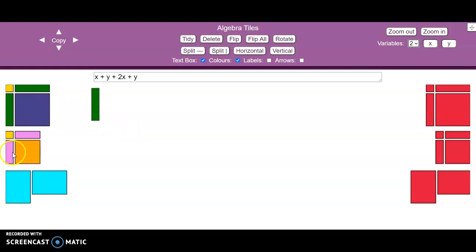So now I've got an x, I've got a y, which is a different size from x. I've got two more x's and another y. So when I collect these up together, we can see that we have 3x plus 2y.